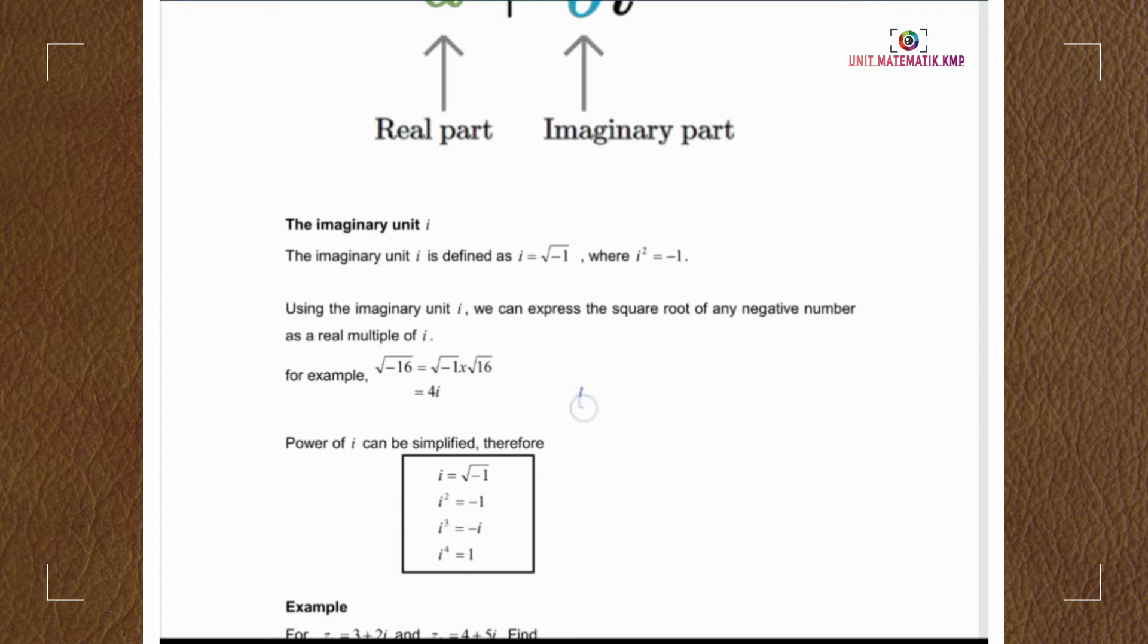And for i cubed, I can write as i times i squared. i squared equals negative 1, so we have negative i.